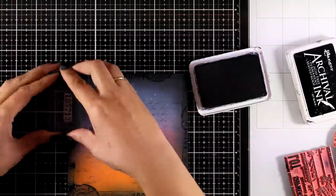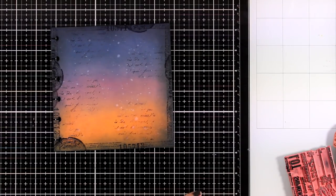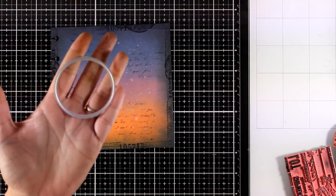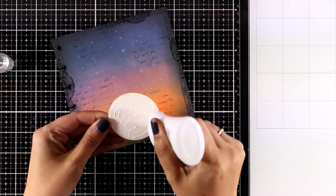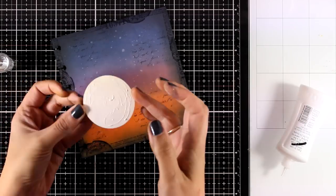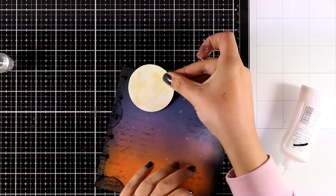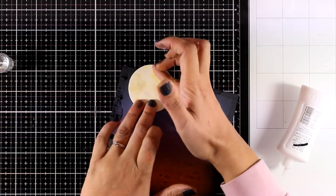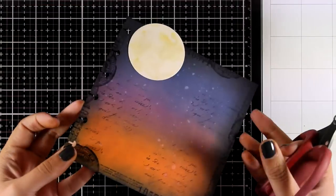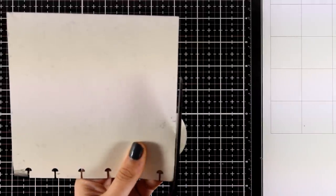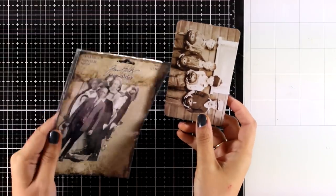At this stage I'm pretty happy with how my background is looking so I will move on and create a moon for my page. I used a circle die to cut out my moon out of mixed media paper and I splattered on top of it a little bit of fossilized amber distress oxide ink. You can see I do have some variation of color on top of my moon, making sure that I didn't completely cover it up. I used my glue to stick it down and I'm just chopping off the excess.